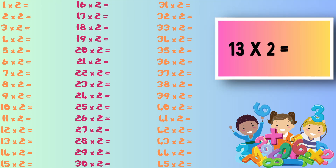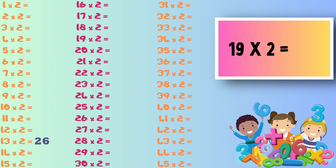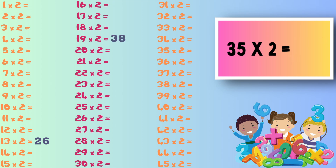Our first sum is 13 times 2, which is 26. Next up it's 19 times 2. This is 38. Next up it's 35 times 2. This equals 70.